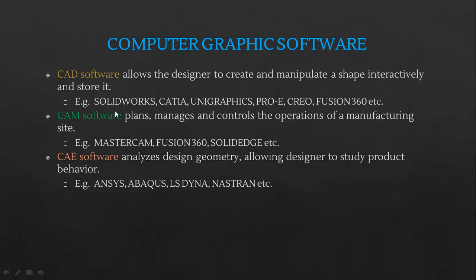CAM software plans, manages, and controls the operations of a manufacturing site. So you have planning of manufacturing, managing, and controlling of the manufacturing. We have different softwares for this — MasterCAM, Fusion 360, SolidEdge, et cetera. All these will help us to even generate the tool motion — how should the tool move, where should the tool come first, these coordinates, and then perform a circular interpolation and then a linear move with a given speed. All of that will be planned in this software.